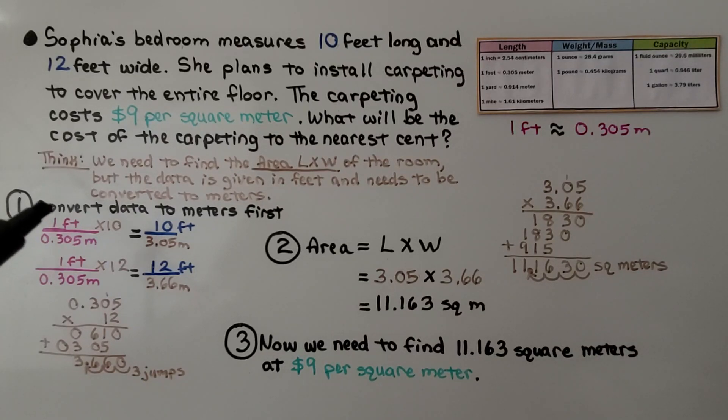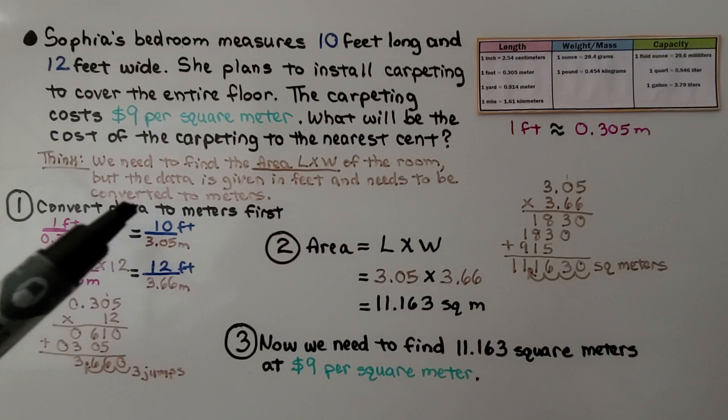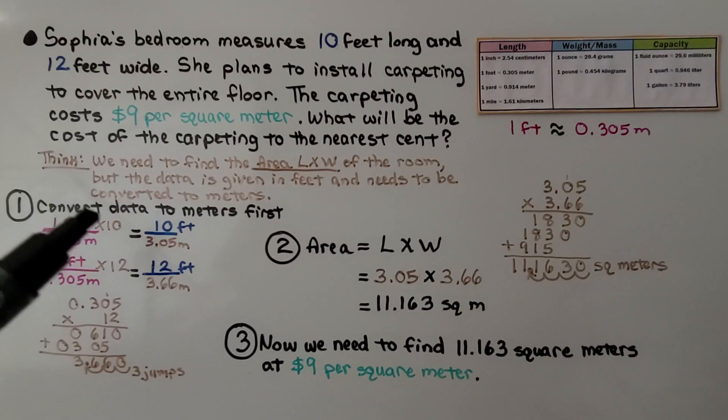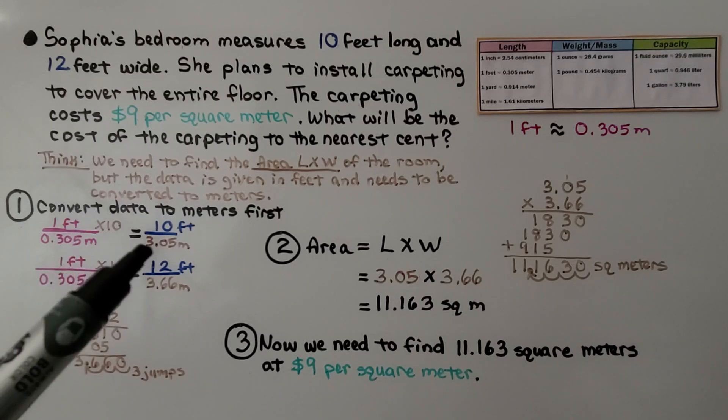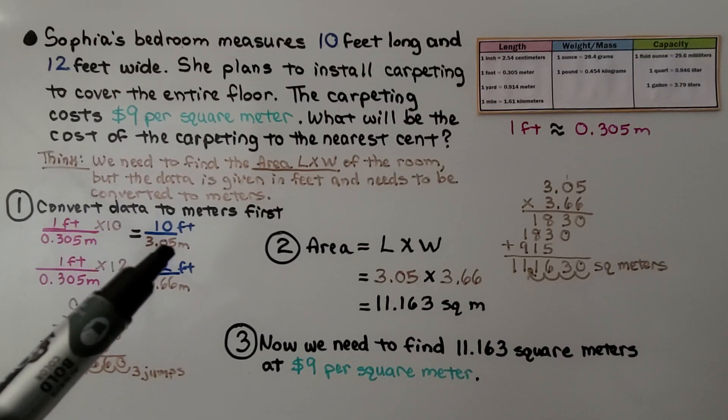We have 1 foot to 0.305 meters, and we need to convert it to 10 feet. If we're multiplying this 1 times 10, then that means we need to multiply this times 10. We're going to get 3.05 meters.